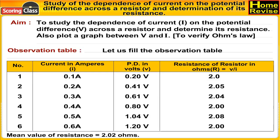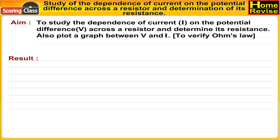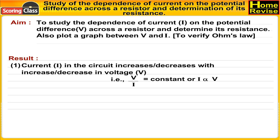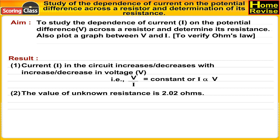From the observation table, calculate the mean value of resistance. Results: current I in the circuit increases or decreases with increase or decrease in voltage V. That is, V upon I equals constant, or I is directly proportional to V. The value of unknown resistance is measured in ohms.